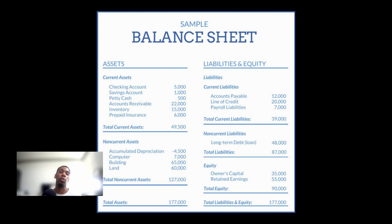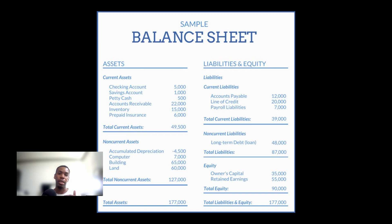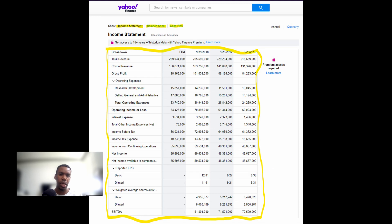Balance sheets are crucial when searching for growth stocks because they reveal a company's financial stability. Since the balance sheet doesn't inform you of the outlook for the future, it's the least favorite for most analysts. When examining a balance sheet, make sure that more than 30 percent of a company's assets exceed its liabilities, and that the annual total cash is increasing.